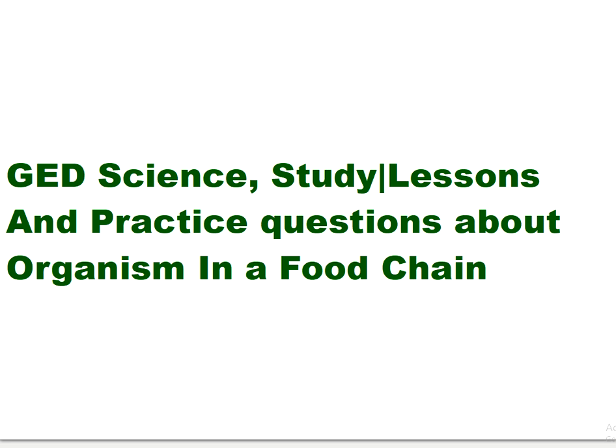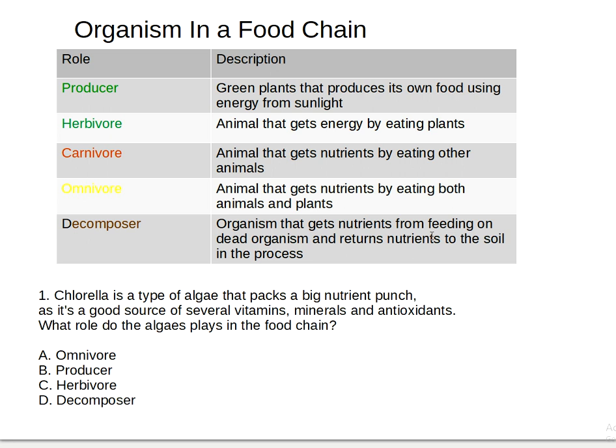So let's get started. Organisms in a food chain — there's a role and description. The role 'producer': green plants that produce their own food using energy from sunlight. 'Herbivore': animal that gets energy by eating plants. 'Carnivore': animal that gets nutrients by eating other animals. 'Omnivore': animal that gets nutrients by eating both animals and plants.